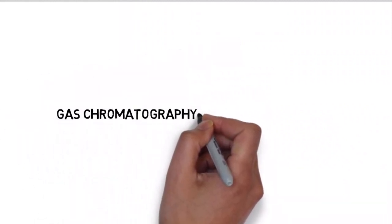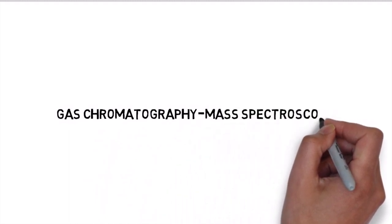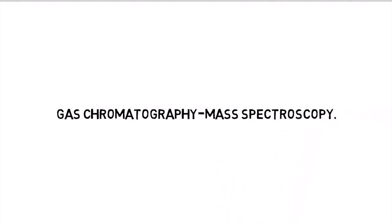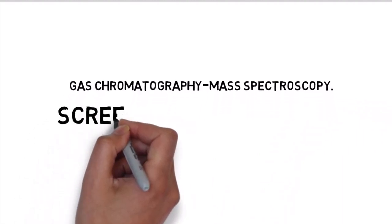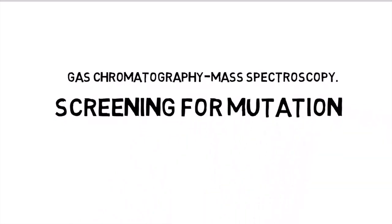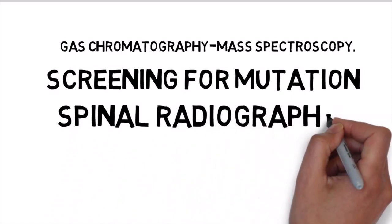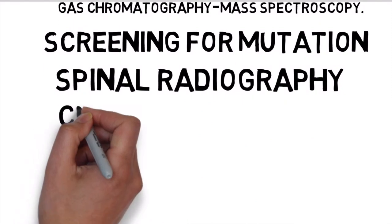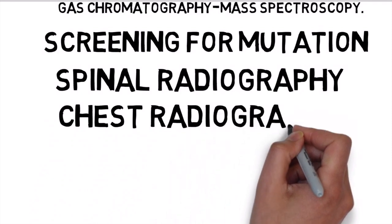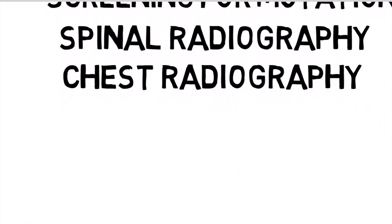Alkaptonuria can be diagnosed by detection of homogentisic acid in the urine using gas chromatography-mass spectrometry. Spectrophotometric quantification shows two orders of magnitude elevation above normal. Screening for mutations can be performed with PCR. Spinal radiography reveals disc degeneration combined with dense calcification, particularly in the lumbar area. Chest radiography is advised to assess for possible involvement of the aortic or mitral valve.